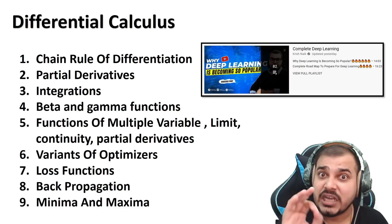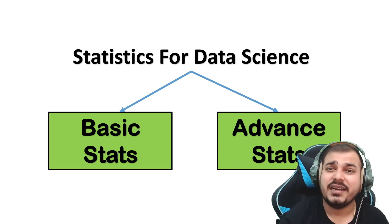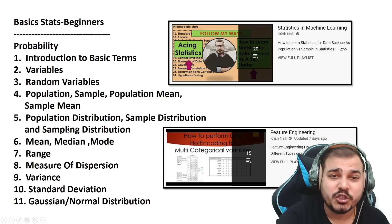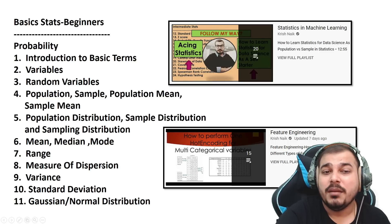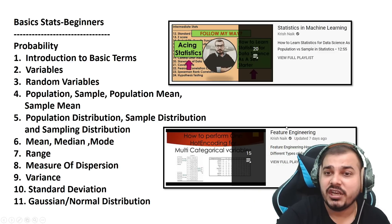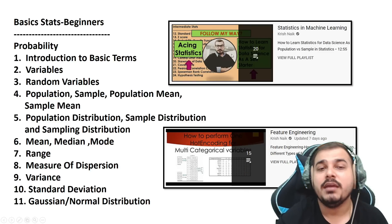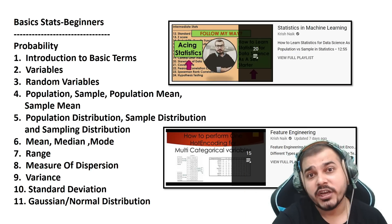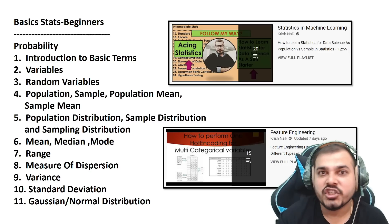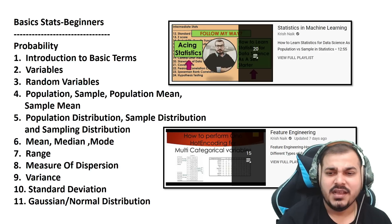Now for the third part: statistics. I divide this into basic stats and advanced stats. In basic stats, topics include: probability, introduction to basic terms, variables, random variables, population vs. sample, population mean, population distribution, sample distribution, mean, median, mode, measures of dispersion, variance, standard deviation, and Gaussian/normal distribution. These topics are covered in my 'Statistics in Machine Learning' and 'Feature Engineering' playlists, along with the EDA (Exploratory Data Analysis) playlist.